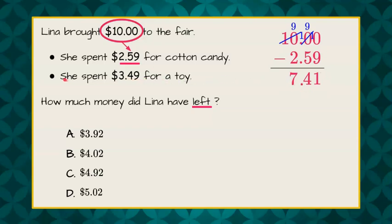Now, let's go back to the problem because we have a second bullet. In the second bullet, it tells us that she spent $3.49 for a toy. So, we need to take this from her remaining money. So, we're going to subtract $3.49 from her remaining $7.41.